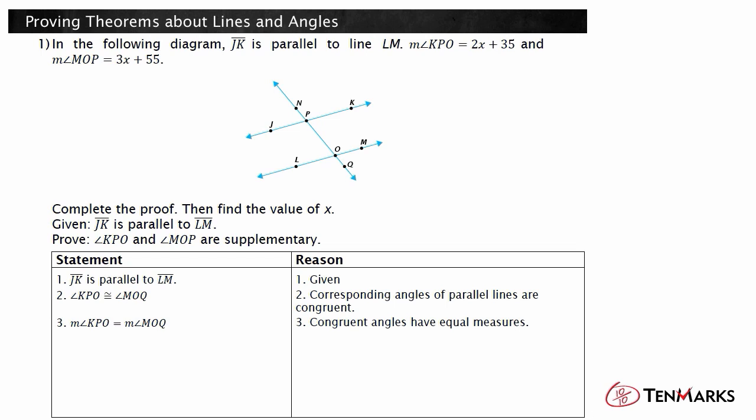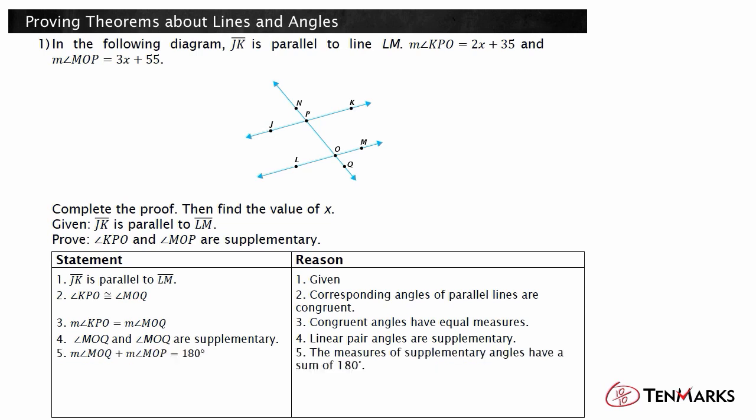Now, remember you are trying to prove that angle KPO is supplementary to angle MOP. Angle MOP and angle MOQ are linear pair angles, so angle MOP and angle MOQ are supplementary. Thus, the measure of angle MOP plus the measure of angle MOQ is equal to 180 degrees.